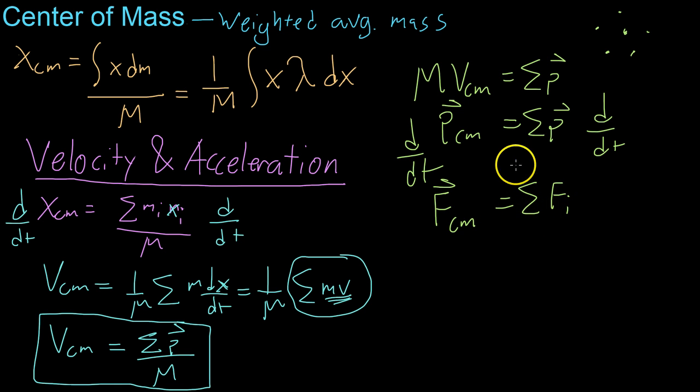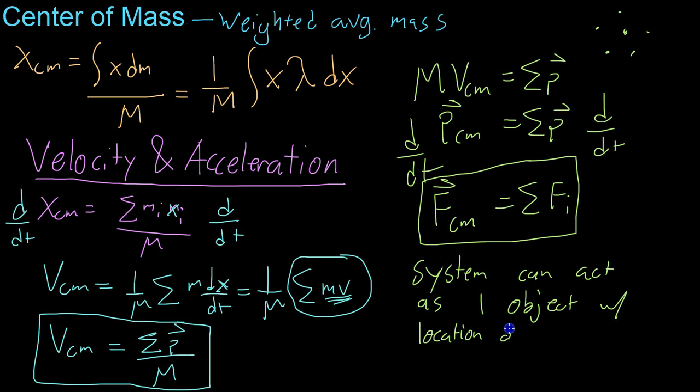And, what this all means, basically, this parallel between the center of mass and the sum of its constituent parts is that a system can act as one object with its location at the center of mass. And, this makes sense when you think about